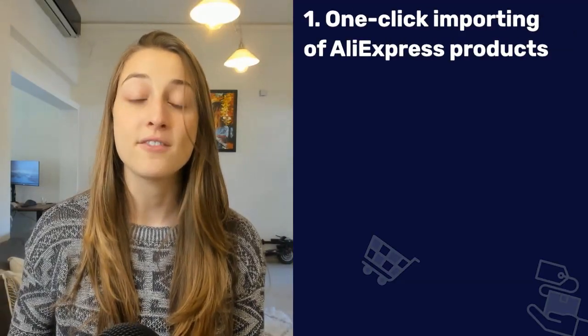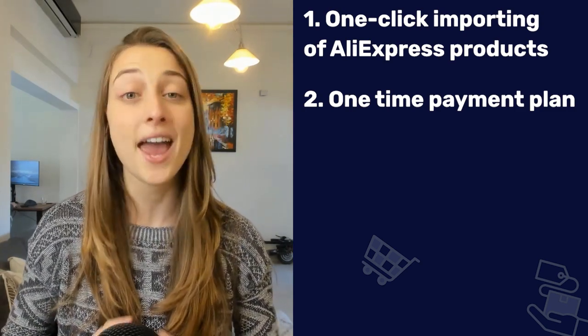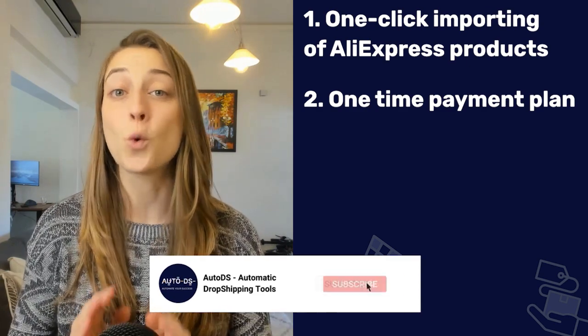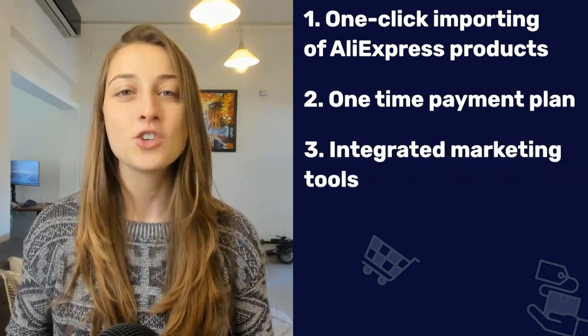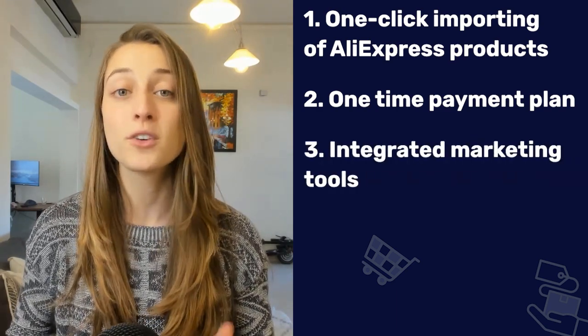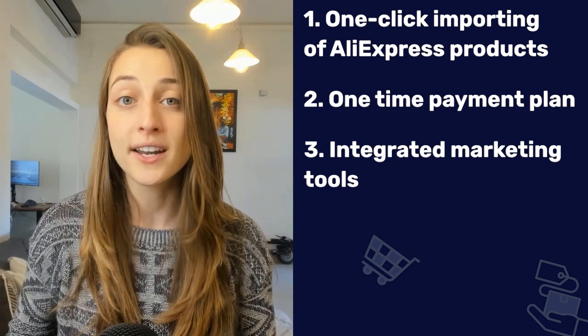Grabbing spot number five is AliDropship, an automation plugin specializing in sourcing products from AliExpress, though it only works on WordPress and WooCommerce. Key features include one-click importing of AliExpress products and a one-time payment plan — you pay $89 once and get lifetime support and unlimited use. AliDropship also provides digital marketing tools like abandoned cart recovery, customer review importing, and discounted coupons.